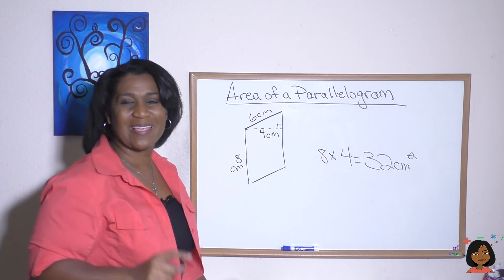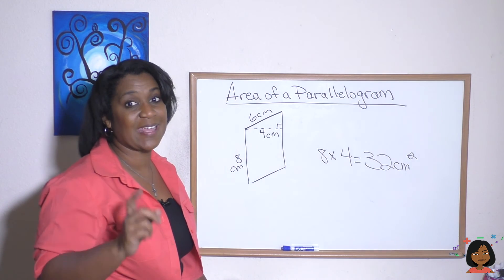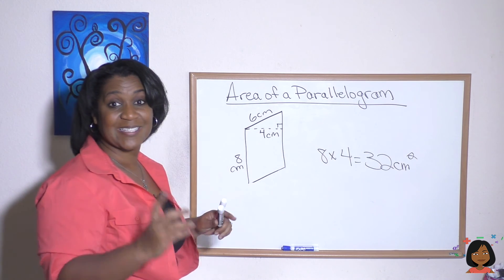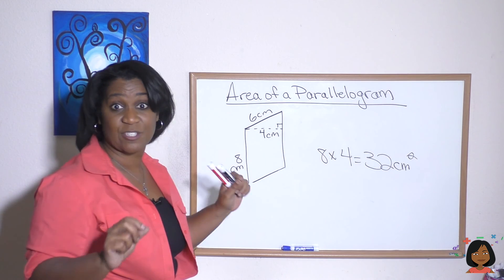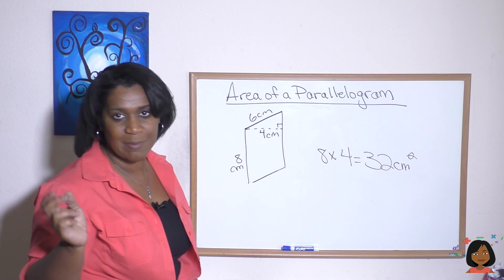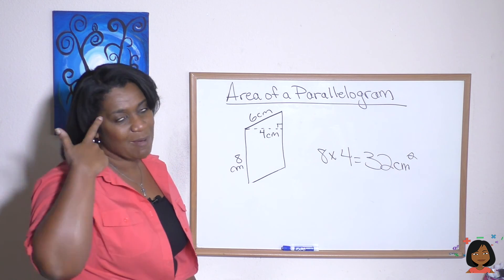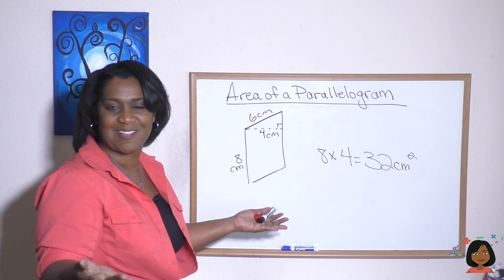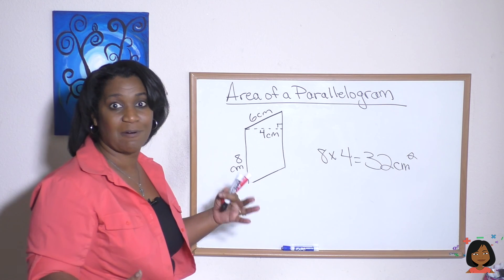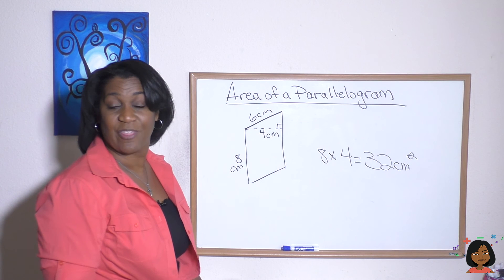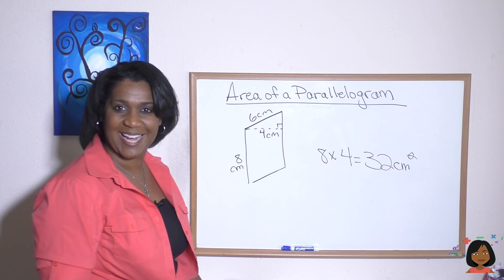If you can do base times height, just remembering that height is not always that side but it has to do with where that 90 degree angle would fall and the length that's at that moment, then you've got that area of parallelogram down cold. Always remember in your mind that cutting off that little triangle and sliding it over - it's like oh, I have a rectangle. That hopefully will help you remember that we're looking for the height. Okay, that's it for me, Nicole the math lady. I will see you next time. Take care, bye bye.